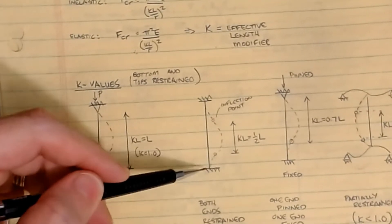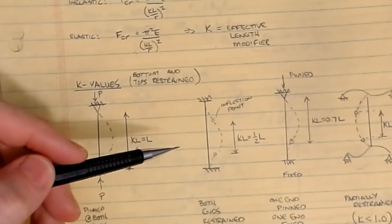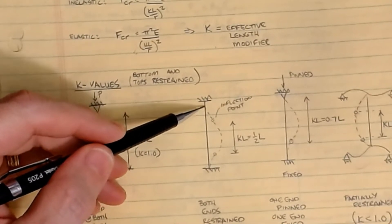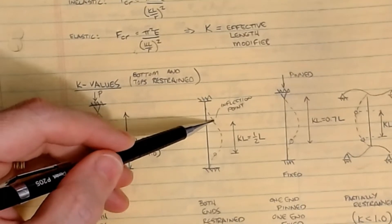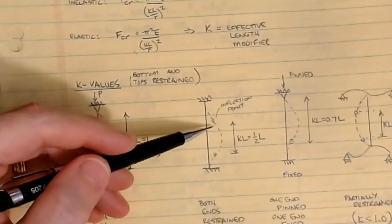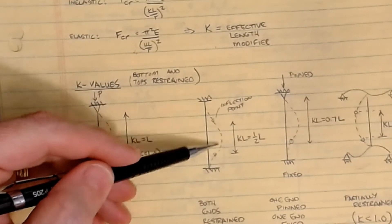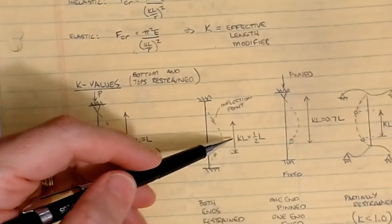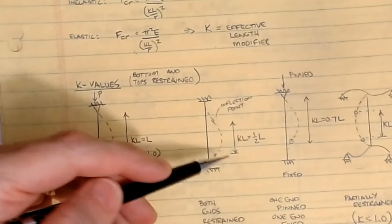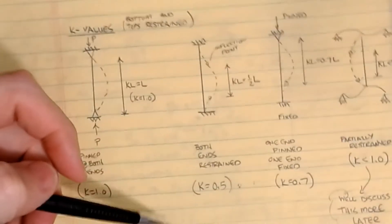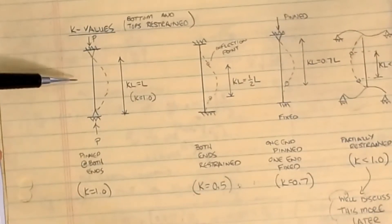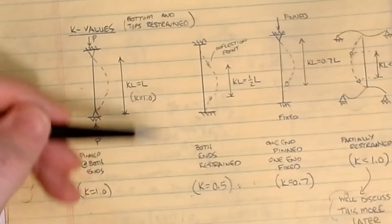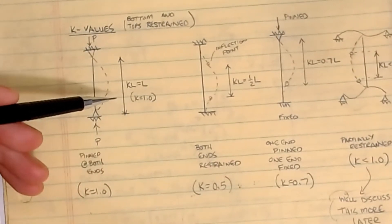Now, if I have a fixed, a pure fixed condition on here, well then what happens is there are inflection points tucked in here a little bit such that the buckling occurs basically over a length of a half an L. That K times L is equal to 1 over 2L. So in this case, K is taken as 0.5. So on one end we have free to rotate K as 1. On the other end we have fully fixed K as a half. Everything else is in between.